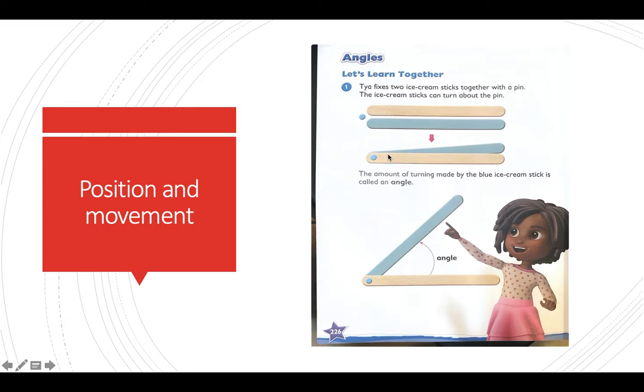The amount of turning made by the blue ice cream stick is called an angle. You remember the angles that we used in shapes? How many angles in a triangle? How about creating an angle now? We use these two sticks to create an angle.